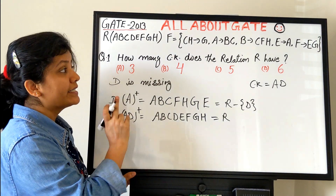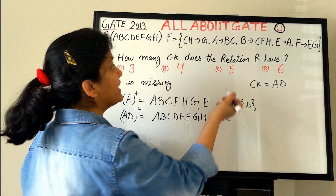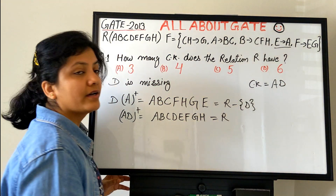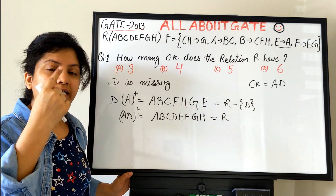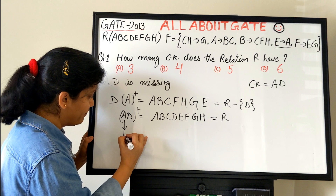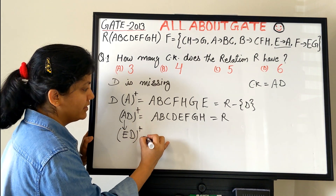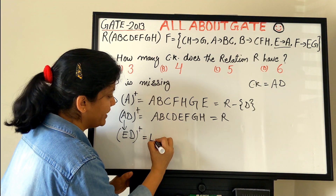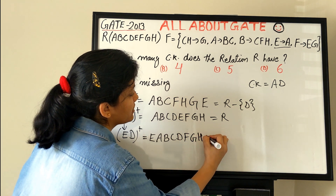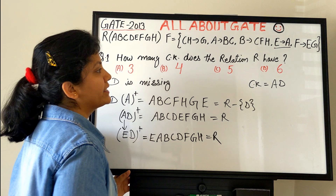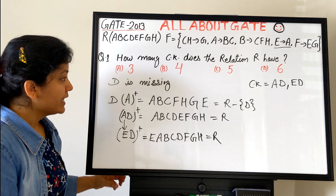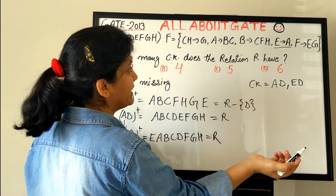To find the next candidate key, check if A is determined by any other attribute. Looking at the FDs, E determines A. So we replace A with E and compute ED+. ED+ gives us E, A, B, C, D, F, G, H — which is the complete R. Therefore ED is also a candidate key.